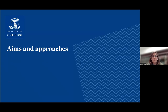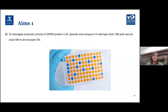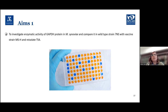Now you have some background about the project. Let's look at aims and approaches. The first aim is to answer whether these mutations have any effect on the enzymatic activity of GAPDH. To answer this, we need to evaluate the enzymatic activity of GAPDH protein in 7NS and compare it with the activity in MSH and TS4, to find out if the reversion in TS4 causes any difference in activity compared to MSH and 7NS.